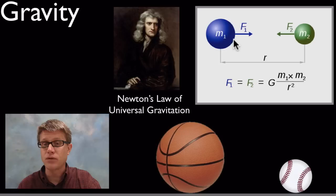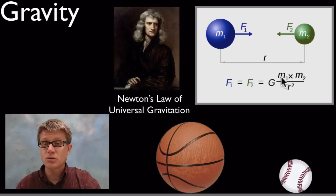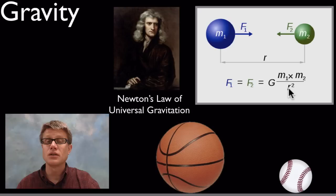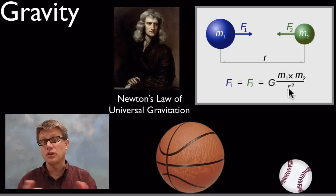The equation is straightforward. For two objects — mass 1 and mass 2 — there's an attractive force we can measure. G stands for the gravitational constant. We multiply the masses together: the greater the masses, the greater the gravitational force. R stands for the radius, or distance between the two. The greater the radius, the smaller the gravitational force.